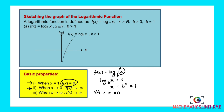When x approaches that vertical asymptote value, you check the value of f(x). When x is approaching that vertical asymptote, what is the value of y? For this case, log(0) — this value will be too small.